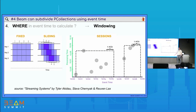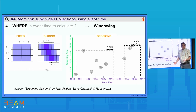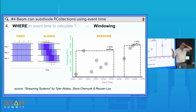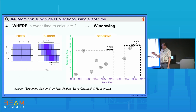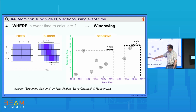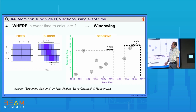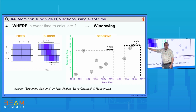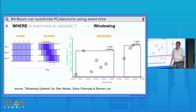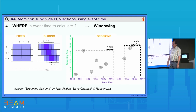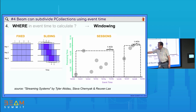You might say: you said we cannot group things, and now you're telling me we need windows — isn't that grouping things? It is, but in a different way. We have two dimensions of time: this is when we see data, this is when data was produced. The dimension we use to group things together is event time — that's the power of the Apache Beam model: being able to group things together by this dimension regardless of when we see them.